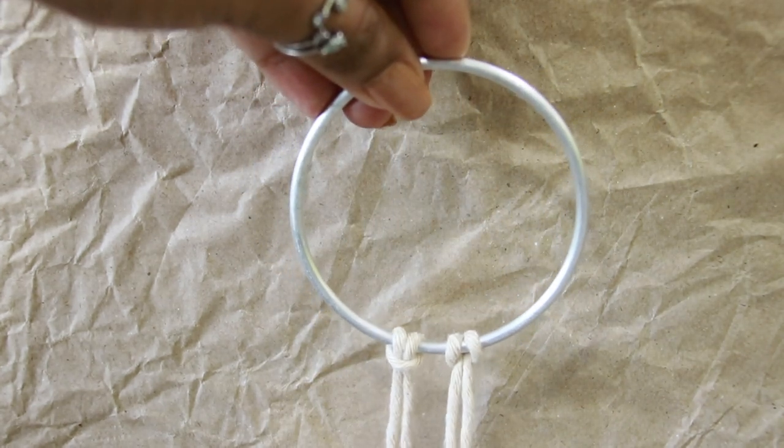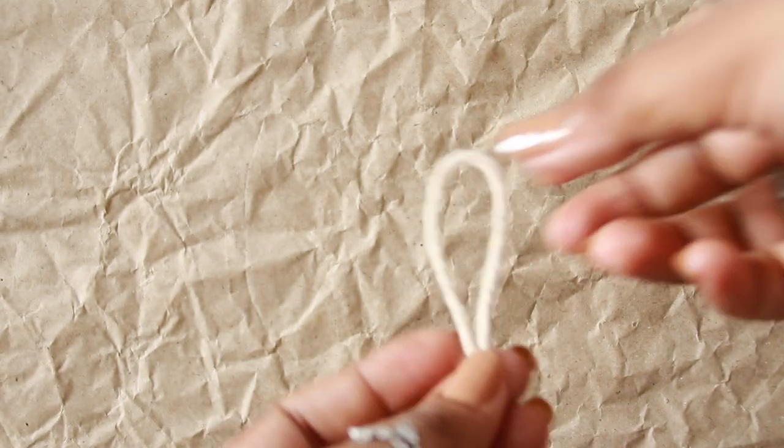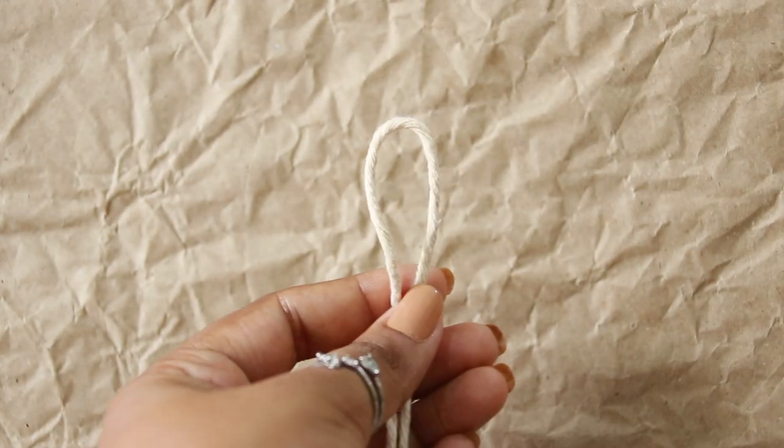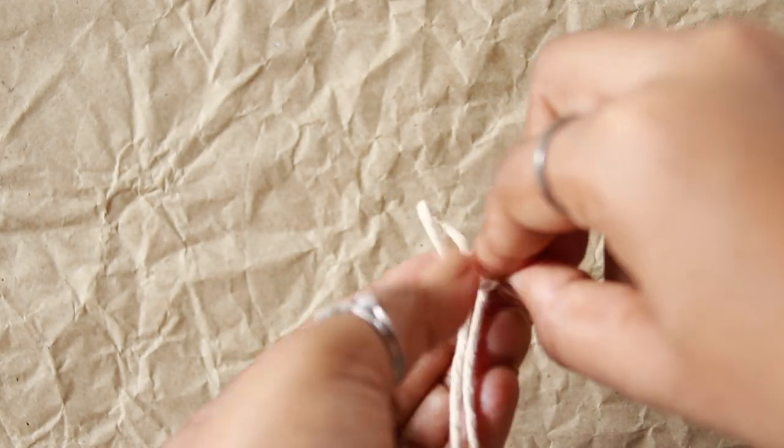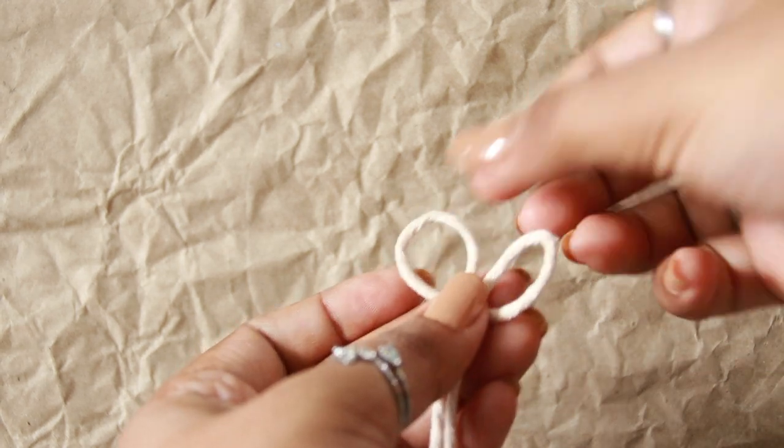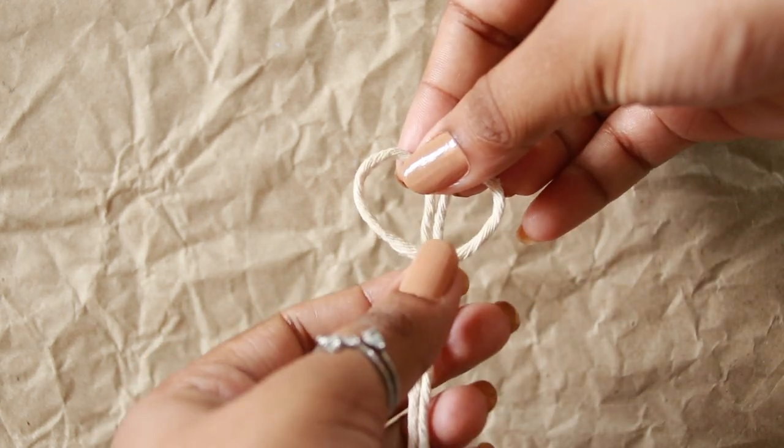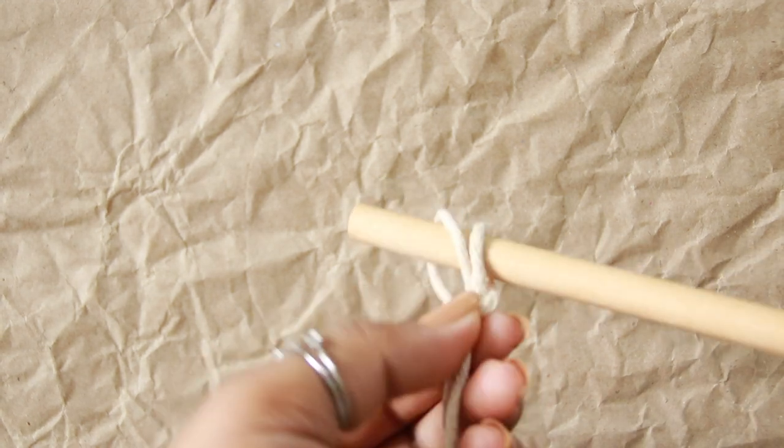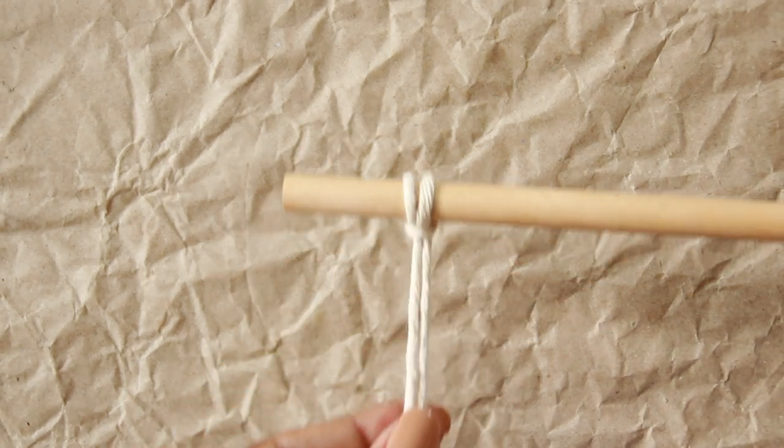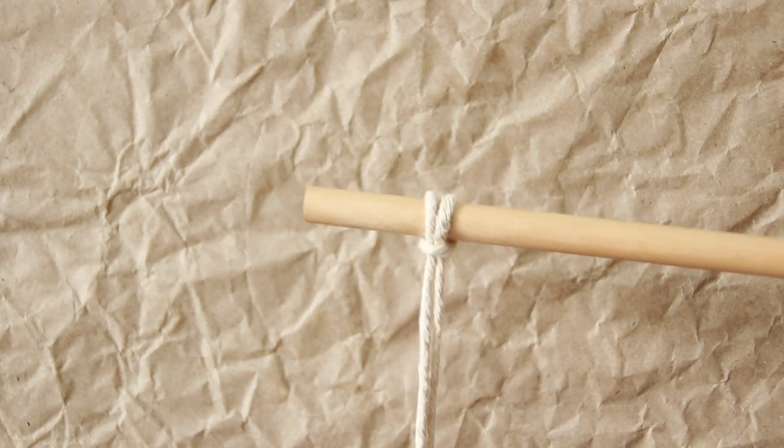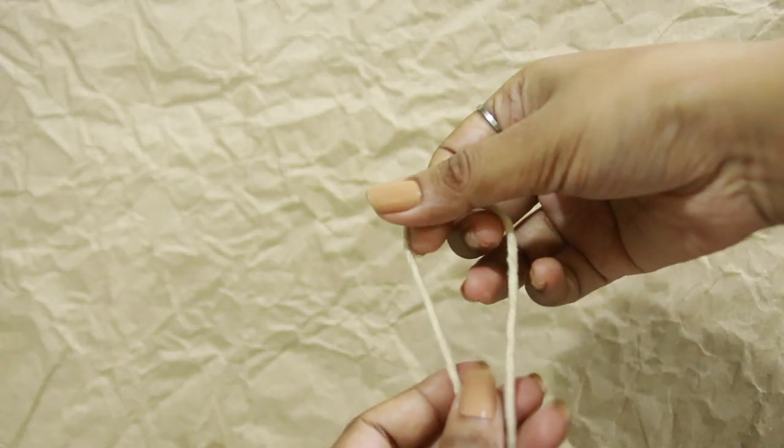To make the lark's head knot faster, once you find the center loop, fold the loop end forward. Insert the dial through the gaps formed from one end to other and tightly secure the knot.